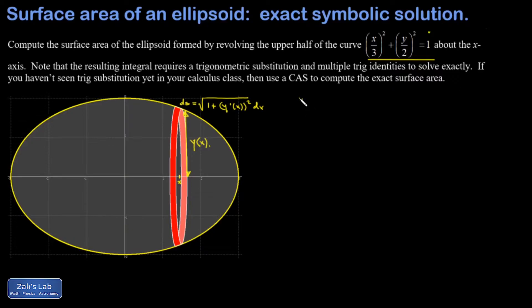I start with y over 2 squared equals 1 minus x over 3 squared, which I'll write as x squared over 9. Then I square root both sides and multiply by 2 to solve for y. So y is 2 square root 1 minus x squared over 9. That's the y that goes in for the radius of the ribbon, but to get that little arc length element, I've got to get the first derivative of y.